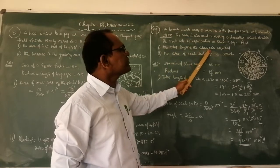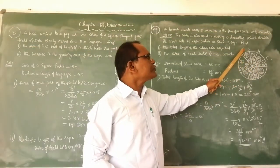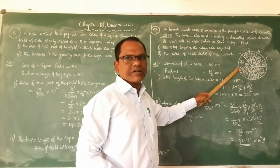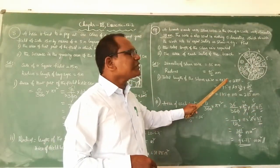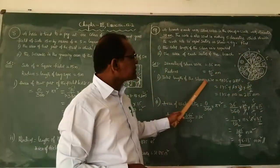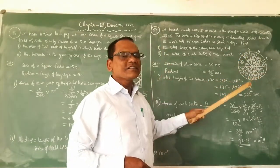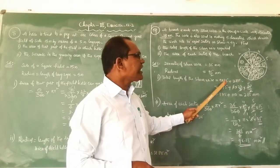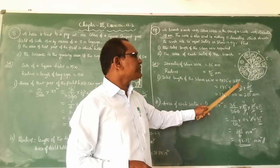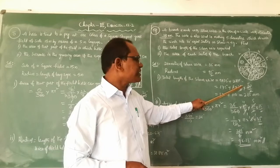Total length of the silver wire required: there are 5 diameters — one, two, three, four, five. Total length equals 5 diameters plus one circumference. Five diameters: 5 × 35 = 170 mm. One circumference: 2πr = 2 × (22/7) × (35/2). The 2 and 2 cancel, and 35 and 7 cancel to give 5, so circumference = 22 × 5 = 110 mm. Total = 170 + 110 = 280 mm.